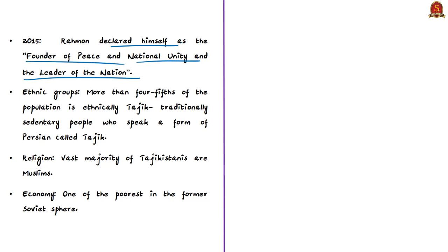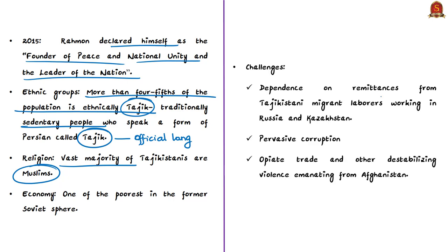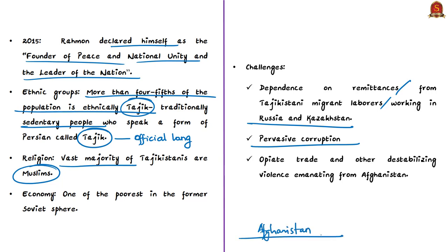Ethnically, more than four-fifths of Tajikistan's population — around 80% — are ethnically Tajik, a traditionally sedentary people who speak a form of Persian called Tajik, which is also the official language. The vast majority of Tajiks are Muslims, while the minority Russians are predominantly Christians. Economically, Tajikistan remains the poorest of the former Soviet states. Its economy faces major challenges including dependence on remittances from migrant laborers working in Russia and Kazakhstan, pervasive corruption, and sitting on one of the world's highest-volume illicit drug trafficking routes between Afghan opiate production and the drug markets of Russia and Eastern Europe.